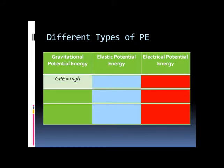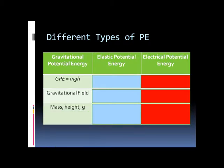Gravitational Potential Energy is given by mgh. It occurs when there is a gravitational field acting on a certain mass. The key words that commonly appear for questions on this topic are mgh.